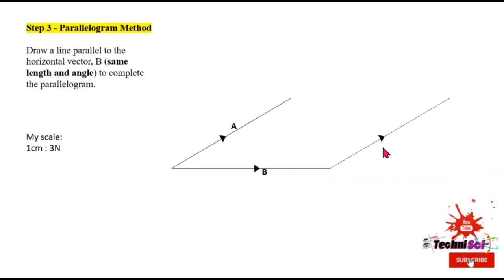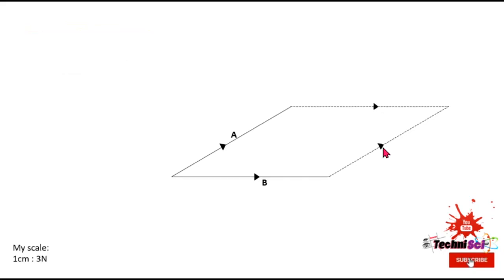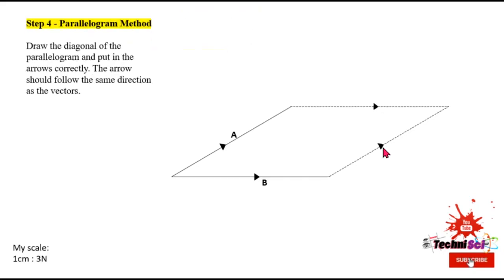Step three, I am now going to be drawing a line parallel to B. And again, it should be the same length, same angle, and this will complete my parallelogram. Now we can move on to step four. We're going to be drawing in the diagonal. So once we're dealing with the resultant, our arrows should be going in the same general direction as our two vectors. And so the diagonal that we now have represents our resultant. So now we have used a scale diagram to get our resultant, but we're not quite done.